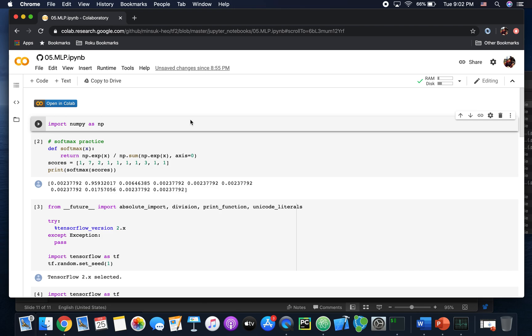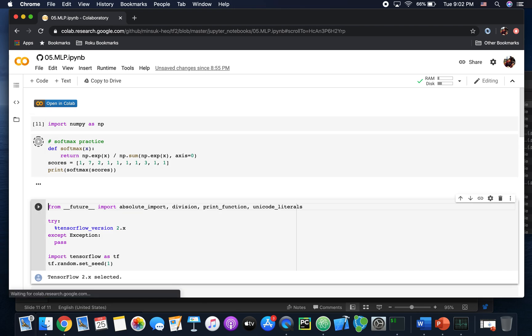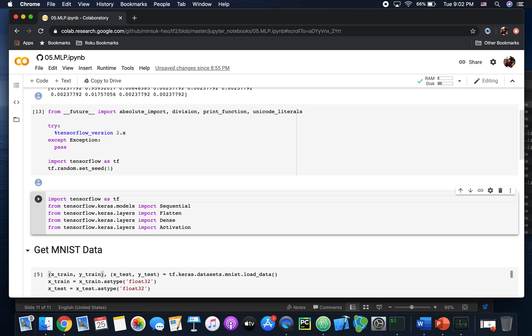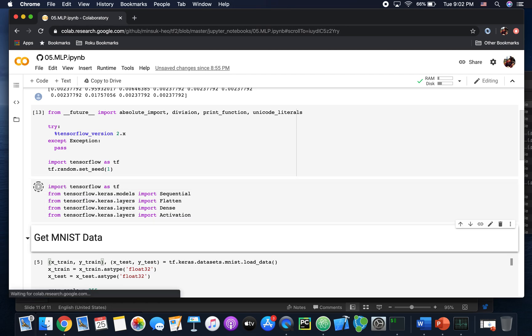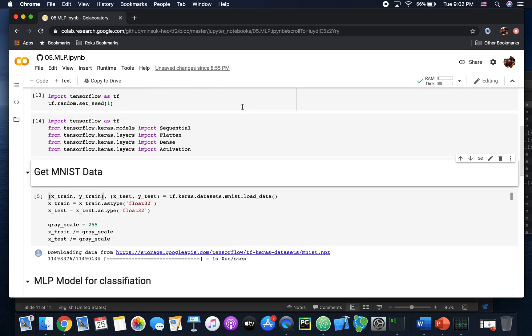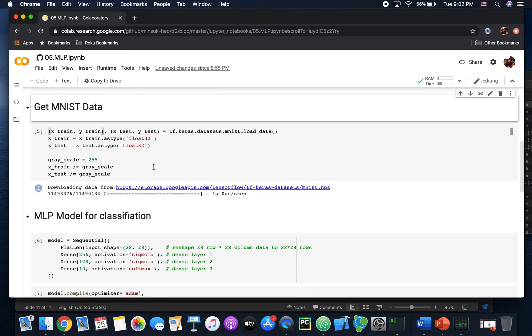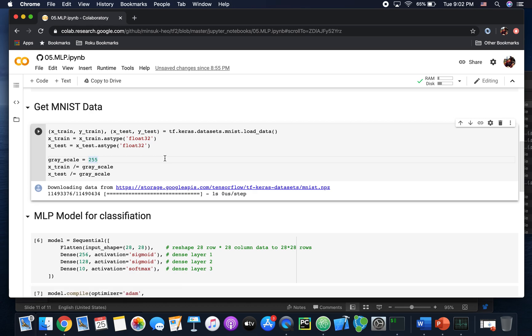You can run this code by cell by cell. First, these two lines are just practicing the softmax equation, but you only need this softmax function because we are going to use TensorFlow 2 softmax activation instead. I'm using TensorFlow 2 version here and importing needed libraries.